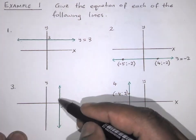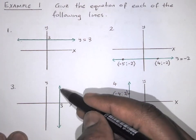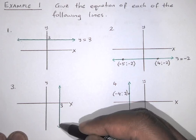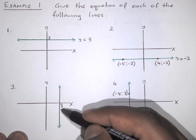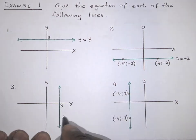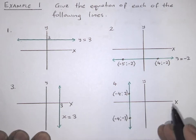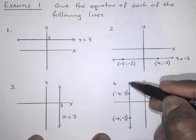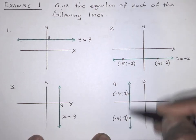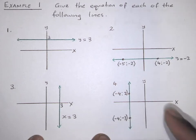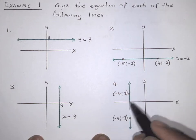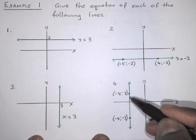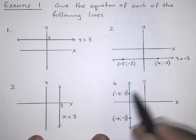Let's look at this one. This one here only cuts the x-axis, and only cuts the x-axis at 3. So the equation of this one is x is equal to 3. If we look at this one here, it only cuts the x-axis. We check what is the x-value here — you can see that the x is always minus 4.